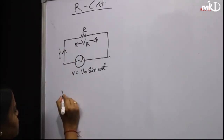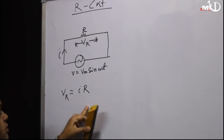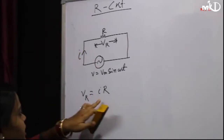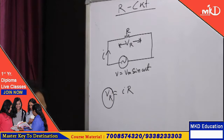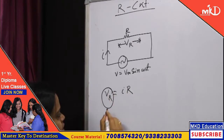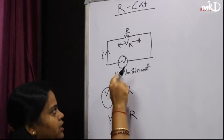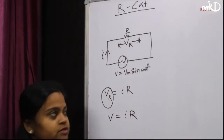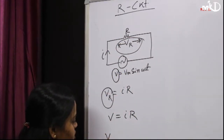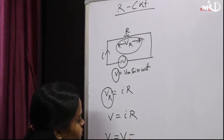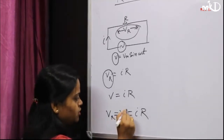Here Vr = I × R. The circuit current is I and Vr means voltage drop across the resistor. According to Ohm's law, V = I × R. In this circuit we have only one resistance, so Vr is equal to V. Therefore Vr = V = I × R.